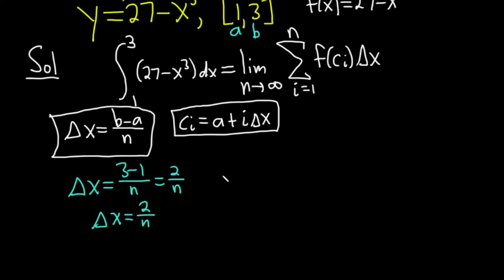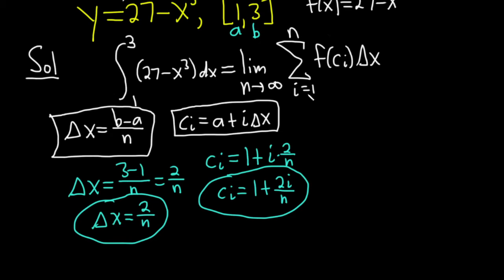c sub i is a plus i delta x. So a is 1 so it's 1 plus i times delta x, i times 2 over n. That's simply c sub i equals 1 plus 2i over n. So we've got delta x, we've got c sub i. Now we have to work this out. Let's first focus on finding f of c sub i. Once we have this, this is the hardest part, we'll plug it in and then work out the sum.